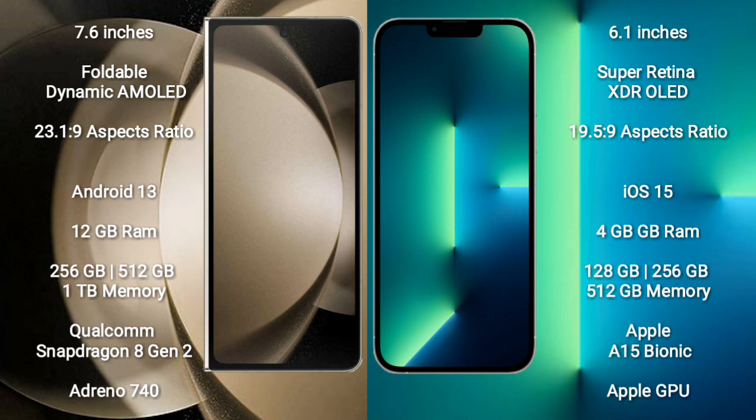Samsung Galaxy Z Fold 5 comes with 12GB RAM and 256GB, 512GB, or 1TB internal storage, Qualcomm Snapdragon 8 Gen 2 processor and Adreno 740 GPU. iPhone 13 comes with 4GB RAM and 128GB, 256GB, or 512GB internal storage, Apple A15 Bionic processor and Apple GPU.